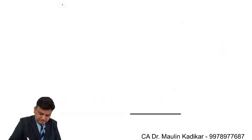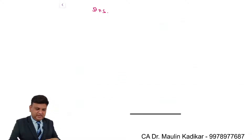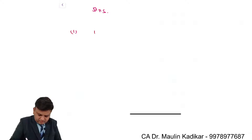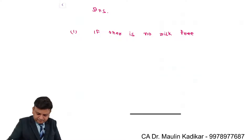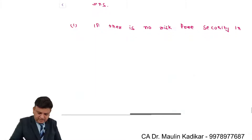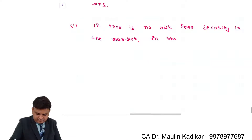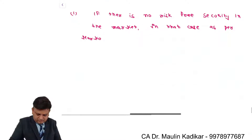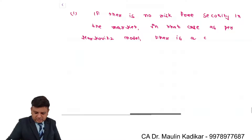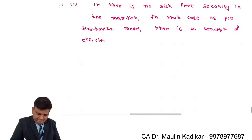So now let us write the answer for the question. First point: if there is no risk-free security in the market, then as per the Markowitz model, there is a concept of the efficient frontier.